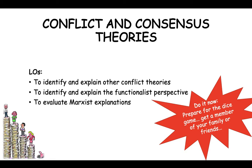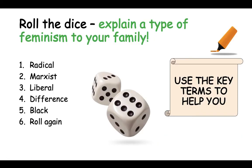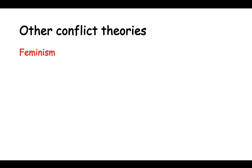Pause this video and go get any dice you have at home. Roll the dice and explain a type of feminism to your family. If you land on three, you will explain liberal feminism. If you land on one, you need to explain radical feminism, and use the key terms you found in your research to help you. Have fun. In terms of other conflict theories, we are going to have a look at feminism as a whole.